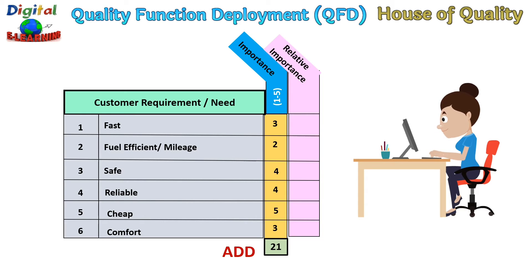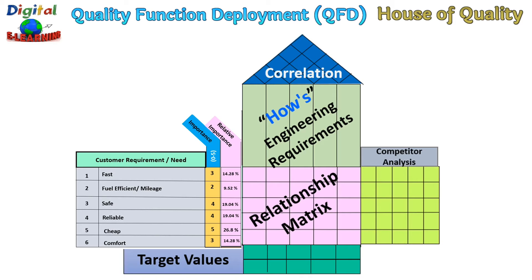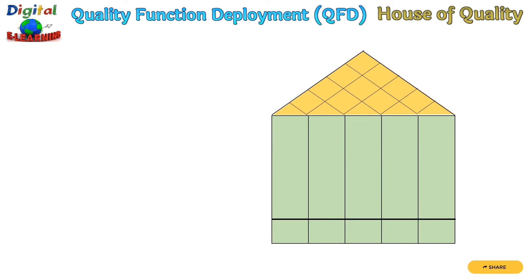We compute the relative importance of each parameter. For 'fast', the relative importance is 3 divided by 21, giving 14.28%. We calculate similarly for each of the parameters. Now that we have defined the left half of the House of Quality — customer requirements, importance, and relative importance — it is time to develop the engineering requirements: how we are going to convert customer requirements into engineering specifications. These are the actual measurable design parameters directly linked to the customer attributes.